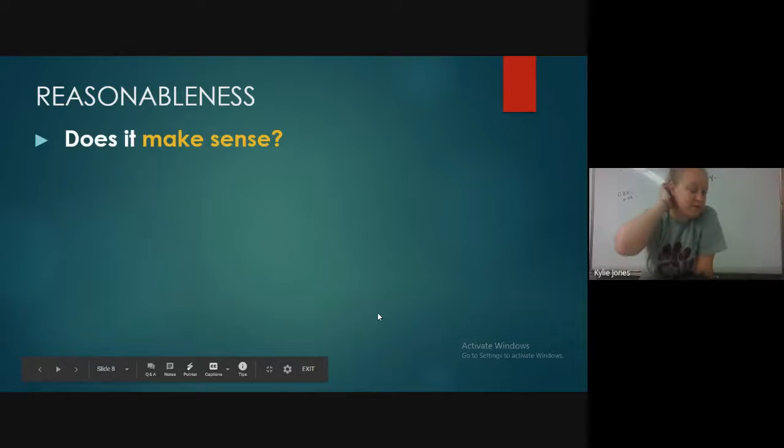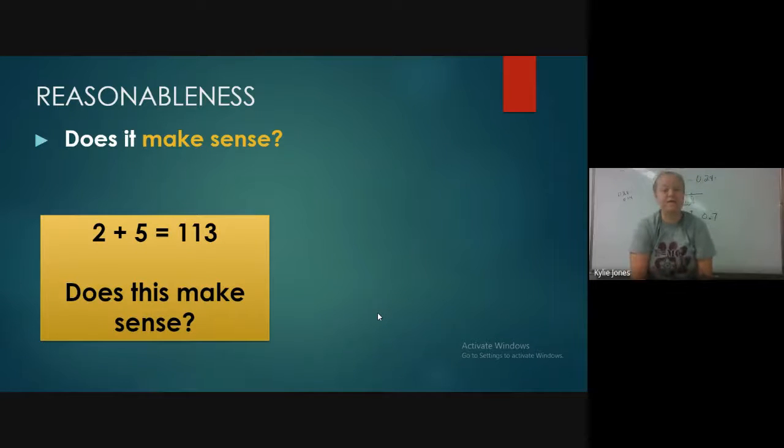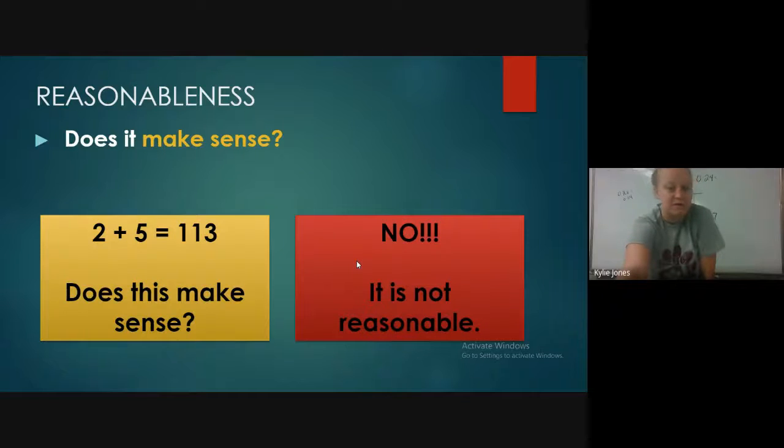So when we're talking about decimals and estimating and things like that, you kind of have to think about if your answer makes sense. So something along the lines of, does 2 plus 5 equal 113? Does it make sense at all? Your answer should be no, because we know it's 7. So we know that it's not 113. So if we're adding decimals and we're estimating decimals and suddenly we end up with the answer of 113 when you tried to add together 2 and 5, you probably missed a decimal point somewhere. So it's saying, is it reasonable? Should you have a decimal somewhere in the middle of your answer? Something along those lines.